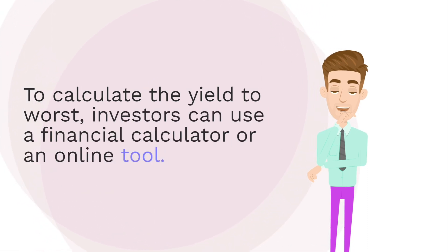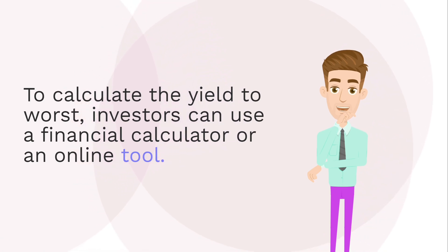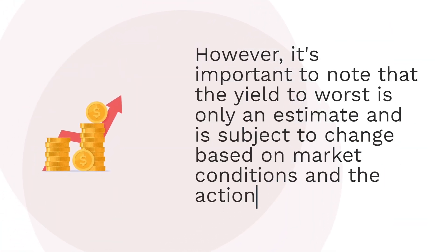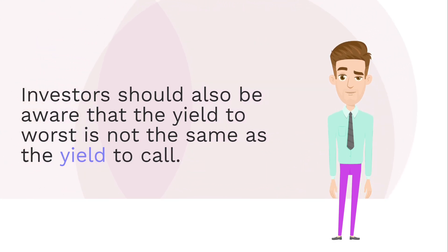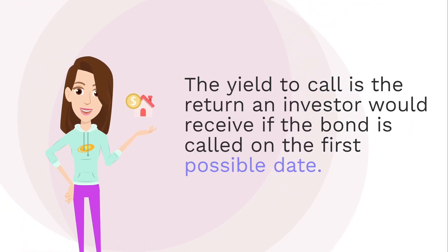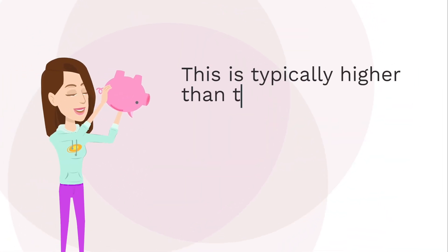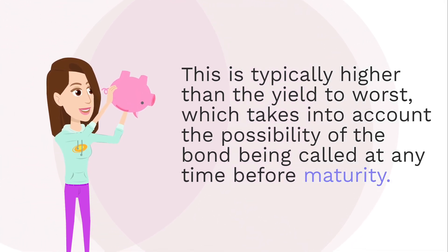To calculate the yield to worst, investors can use a financial calculator or an online tool. However, it's important to note that the yield to worst is only an estimate and is subject to change based on market conditions and the actions of the issuer. Investors should also be aware that the yield to worst is not the same as the yield to call. The yield to call is the return an investor would receive if the bond is called on the first possible date, and is typically higher than the yield to worst, which takes into account the possibility of the bond being called at any time before maturity.